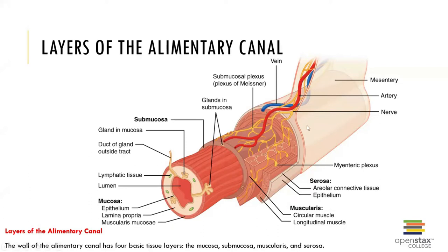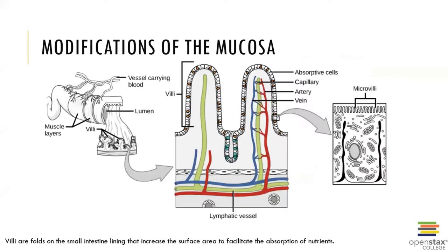Those terms are bolded, and then you have a description and some subterms underneath to describe the tissue in more detail. The mucosa has some modifications, and you can see those in this image here.